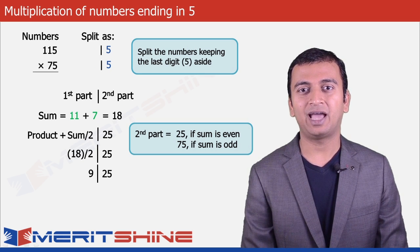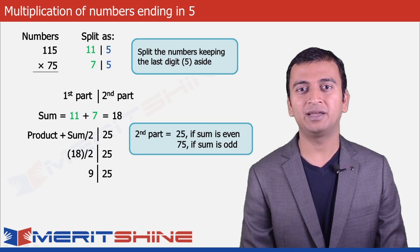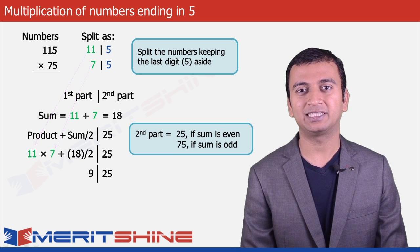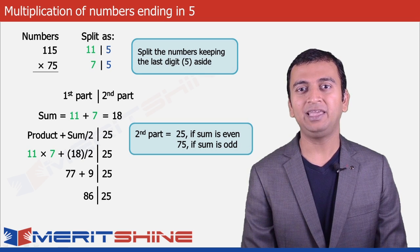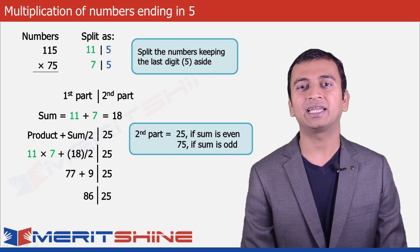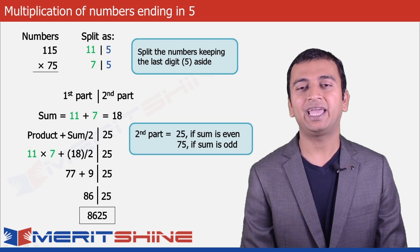To this, we will also add the product of the numbers 11 × 7, 77 giving us 77 plus 9, 86. Finally, we will club these two parts and get our final answer as 8625.